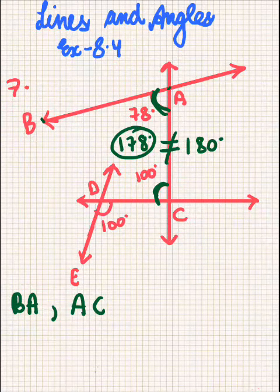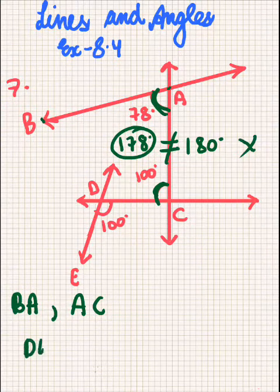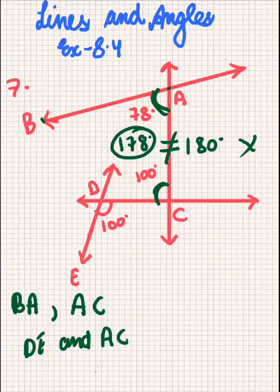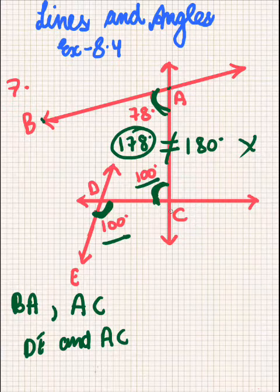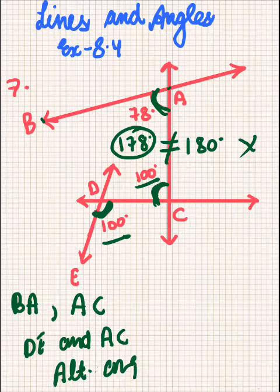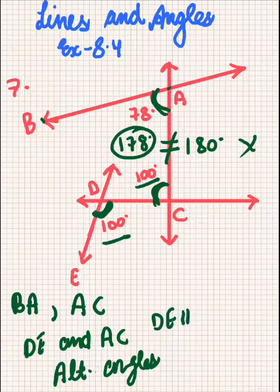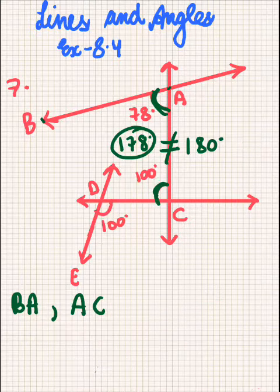Now let's check lines DE and AC. This angle is equal to that angle — both are 100 degrees. These are alternate angles. So, due to alternate angles, DA is parallel to AC because of alternate interior angles.